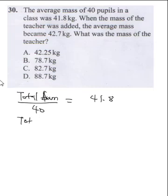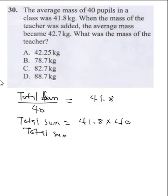The total sum will be 41.8 times 40, and when you multiply this, your total sum is going to be 1672 kg. Now it says when the mass of the teacher was added, so a new mass was added.